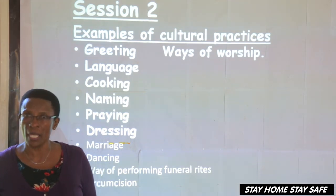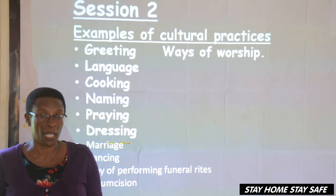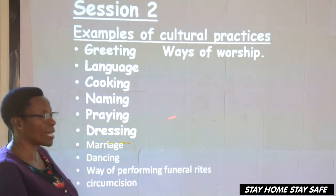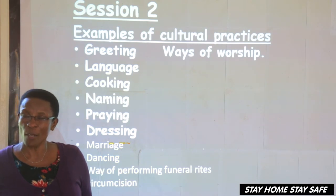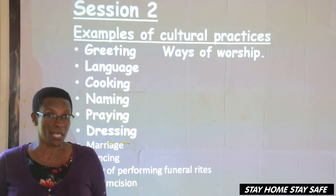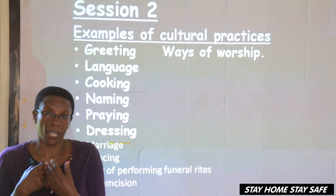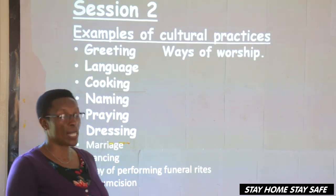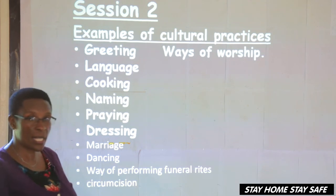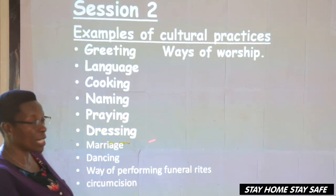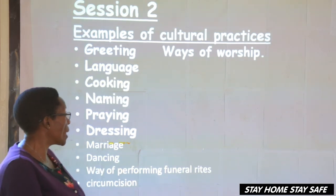Then, praying — the way of praying. Some people pray from the shrines; they have their ways of praying. Then, another one is dressing — traditional dresses. Do you know a traditional dress in Uganda? That is a Gomesi and a Kanzu. In our place, we put on a dress and a cloth which we call a suit. Different cultures have different dressing. Then, marriage — different cultures marry in different ways. That is also an example of cultural practice.